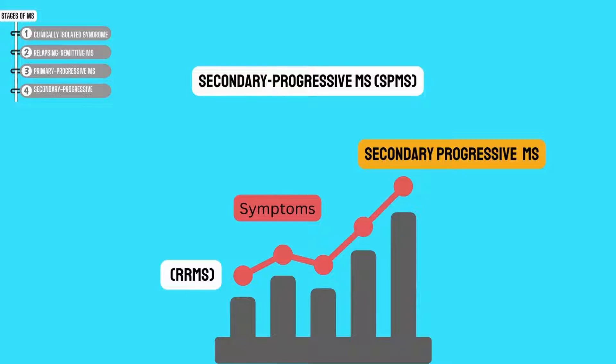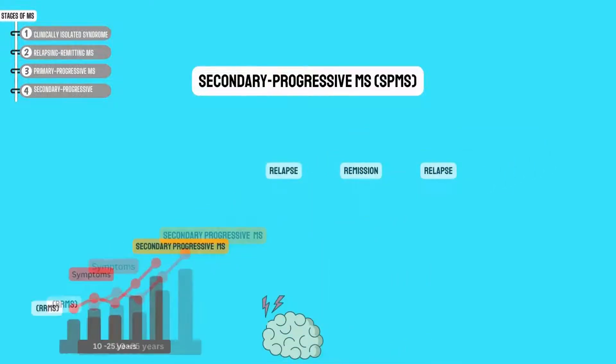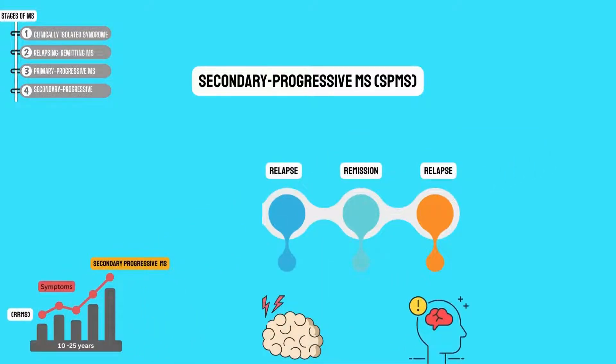Some of those with the relapsing-remitting form of the condition will go on to develop SPMS. This generally happens within 10 to 25 years of the first diagnosis. In SPMS, people may still experience relapses. These are then followed by partial recoveries or periods of remission, but the disease doesn't disappear between cycles. Instead, it steadily worsens.